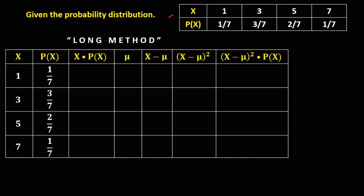First we need to supply all the unknown columns. For the x·P(x) column, we multiply x and P(x). So 1 times 1/7 is 1/7. Then 3 times 3/7: 3 times 3 is 9, so 9/7. Then 5 times 2/7: 5 times 2 is 10, so 10/7. And 7 times 1/7: 7 times 1 is 7, so 7/7.